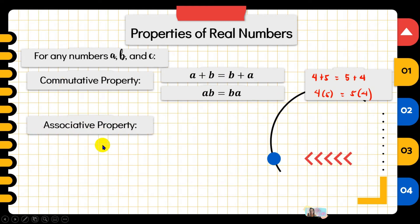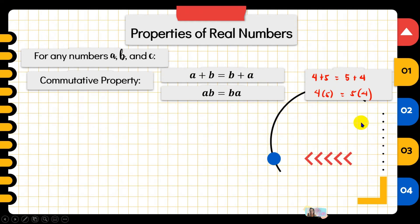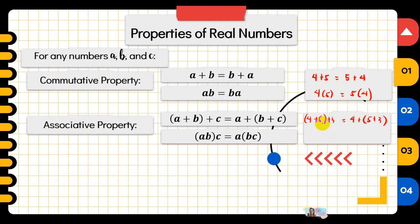Another property of real numbers is the associative property. When we say associative, it involves groupings with three real numbers. The first two addends, when grouped and added to the third, are equal to A plus the sum of B plus C — the last two addends grouped. For example, (4 plus 5) plus 3 equals 4 plus (5 plus 3): 9 plus 3 is 12, and 8 plus 4 is also 12. Same goes for multiplication: (4 times 5) times 3 equals 60, same as 4 times (5 times 3) which is also 60.